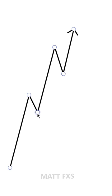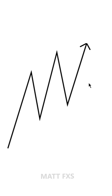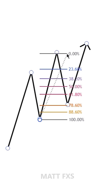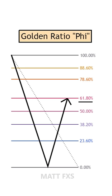If these are drawn in a strong trend, then the 23.6, 38.2, or 50% retracement levels are more likely to be tested. And if these are drawn in a slower trend, like a channel or a ranging market, then the 61.8, 78.6, or 88.6 levels are more likely to be tested.